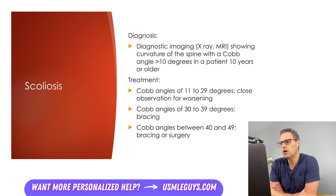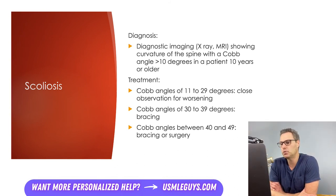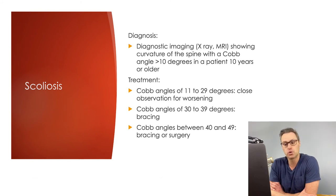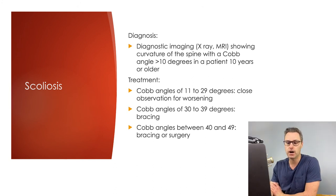When it comes to management: if the Cobb angle is between 11 and 29 degrees, close observation with clinical assessments every five to nine months should be done, with frequency depending on severity. If the Cobb angle is between 30 and 39 degrees, bracing is used as long as the patient still has growth remaining as determined by the Risser sign — if the patient is no longer growing, the brace won't be effective. Patients with Cobb angles between 40 and 49 degrees may have bracing or require surgical correction of their spine.